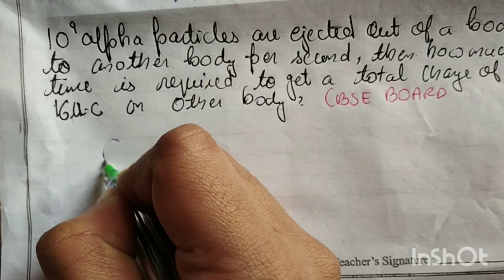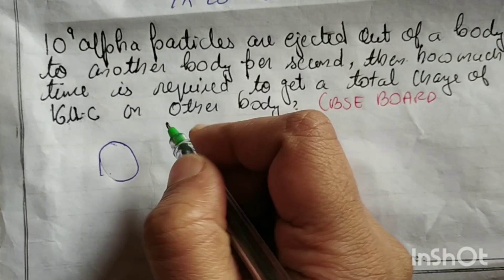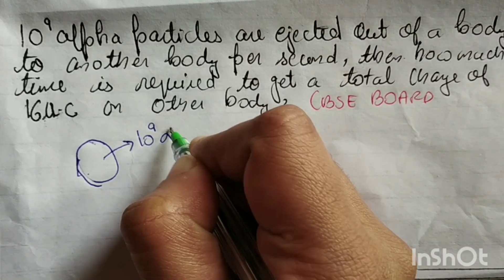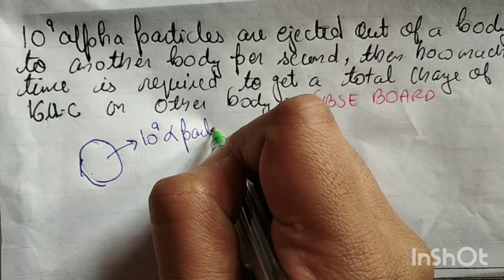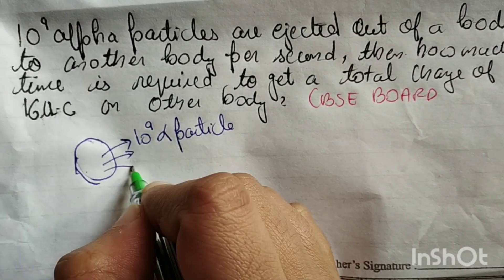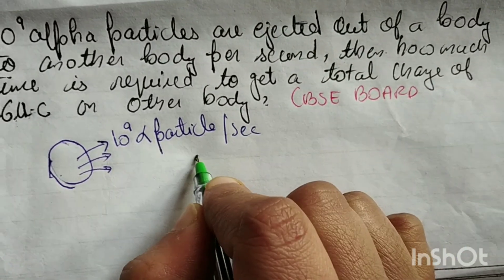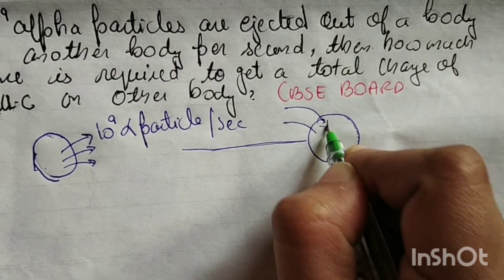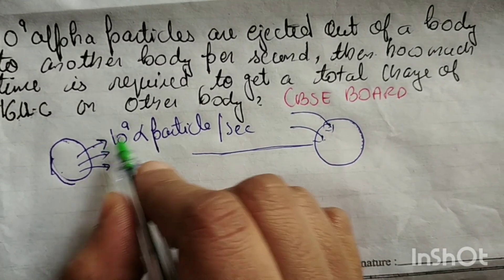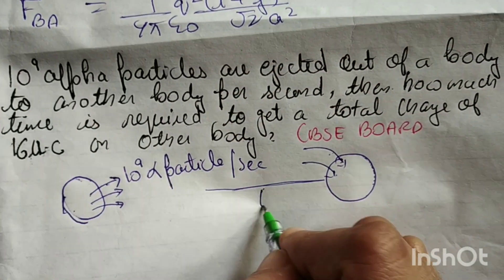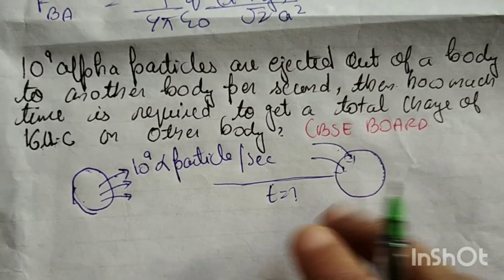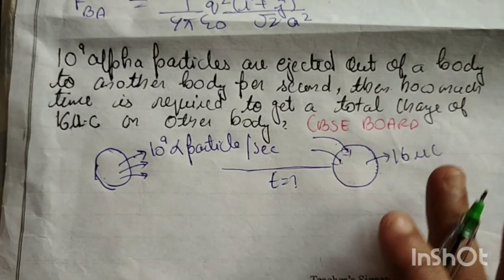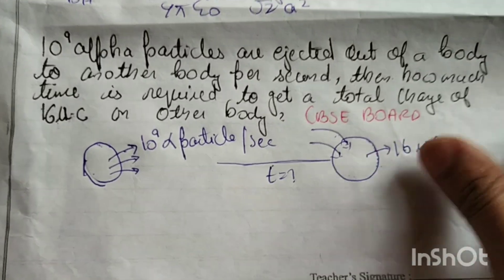So we have a body. Now, per second — or in 1 second — 10 to the power 9 alpha particles are ejected out. Another body is acquiring them. How much time will it take for this body to acquire a charge of 16 microcoulombs? Microcoulomb is a very small charge, so don't worry, it will happen quickly.